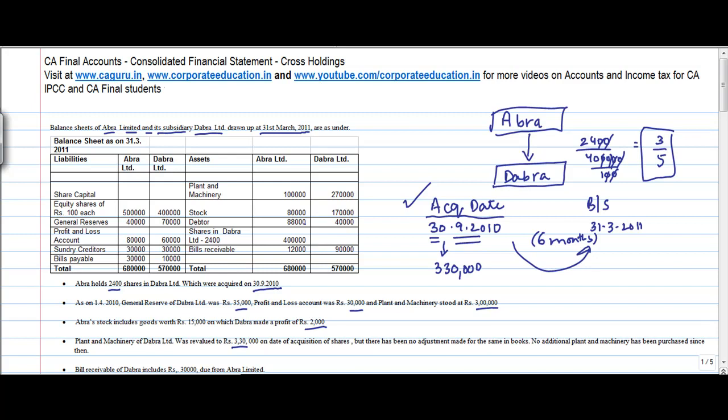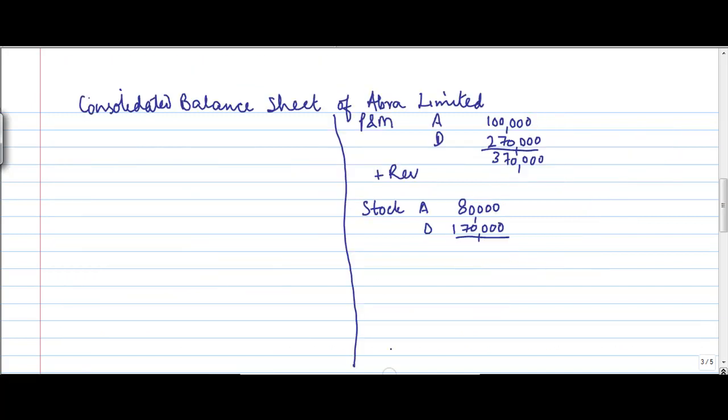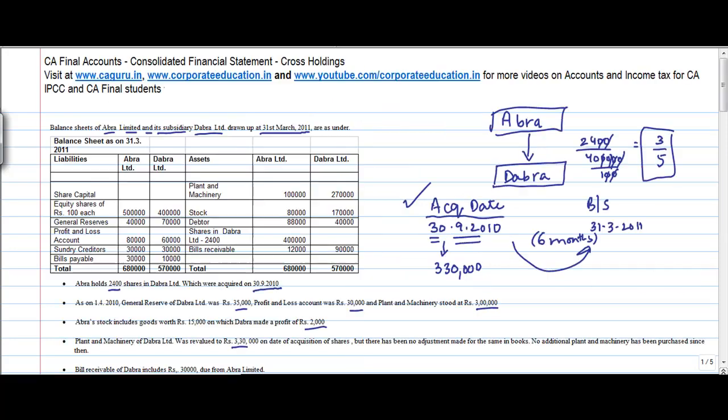Debtors. 80,000, 88,000 and 40,000. There is no adjustment here. 88,000, 40,000. This is for Abra, this is for Dabra. And this I can put in the outer column right away because there is no adjustment which is envisaged here. Then shares in Dabra. Okay, so this one is done. I am just marking it off.